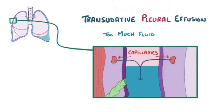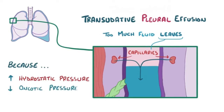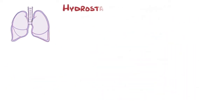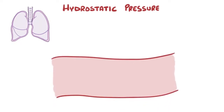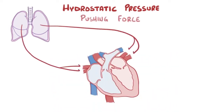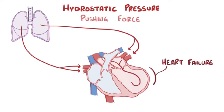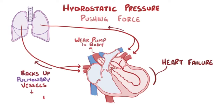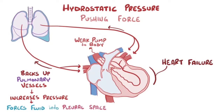Transudative effusion occurs when there is too much fluid leaving the capillaries, either because of increased hydrostatic pressure or decreased oncotic pressure. Hydrostatic pressure, specifically blood pressure, is the force that the blood exerts on the walls of the blood vessels — consider it as a pushing force. One of the most common causes of increased hydrostatic pressure in the lung capillaries is heart failure. When the heart is weak and unable to pump blood effectively, it backs up in the pulmonary vessels, causing increased pressure, which forces fluids out from the capillaries into the pleural space, causing accumulation of fluids, or what we know as pleural effusion.